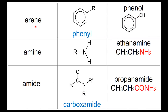The next example are the arenes, which have the phenyl functional group — an example is phenol. Moving on to the amines — this is the amine functional group — an example is ethanamine.